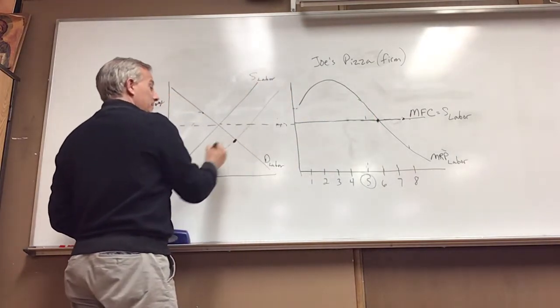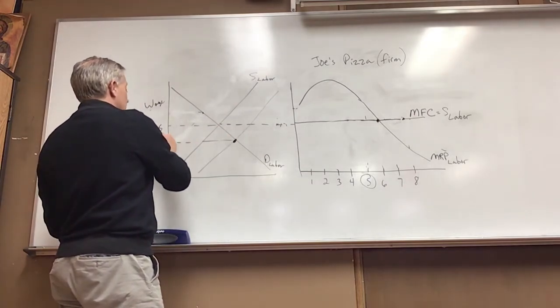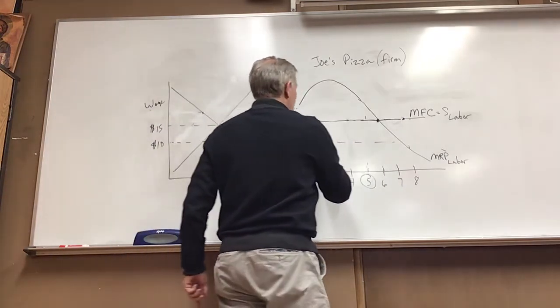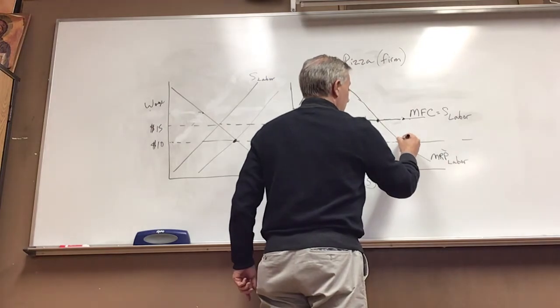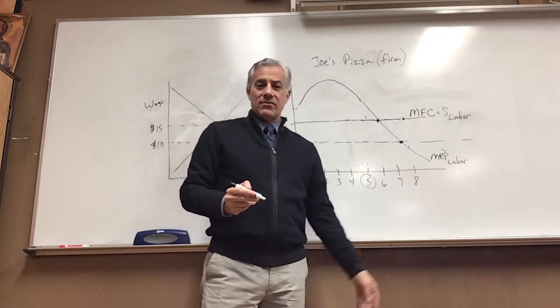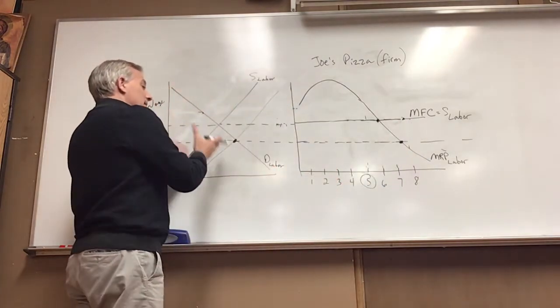Well guess what, our wage came down. So let's say $10. And what's going to happen? We're going to have a new marginal factor cost supply of labor and we're all the way over here hiring more people, something like seven, seven and a half workers. It doesn't matter the number.